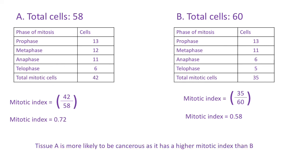Tissue A has higher mitotic index, more cells undergoing mitosis than B, so it is more likely to be cancerous.